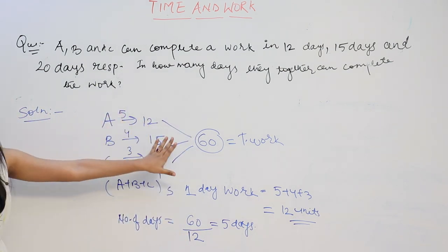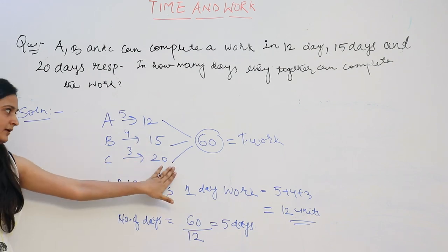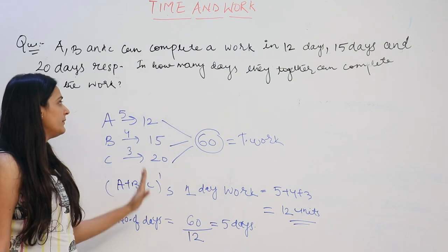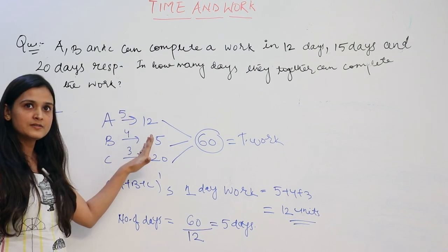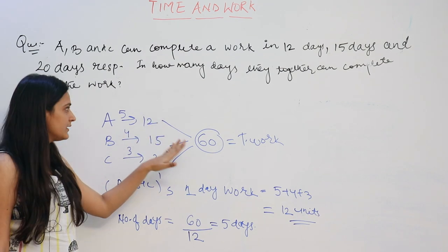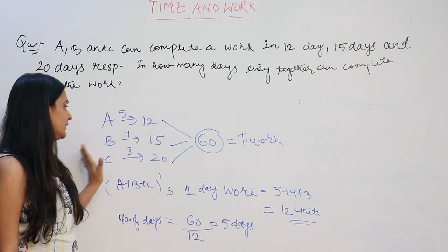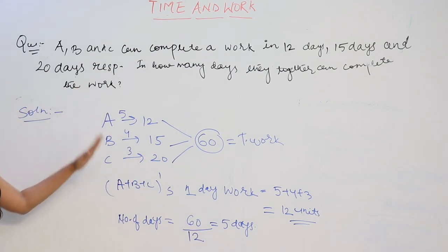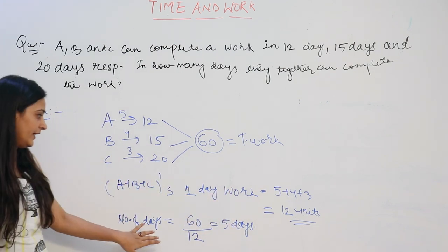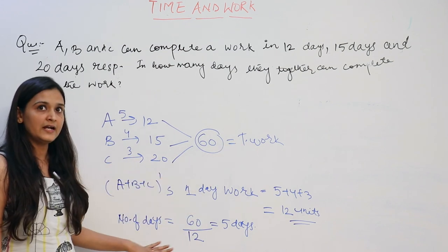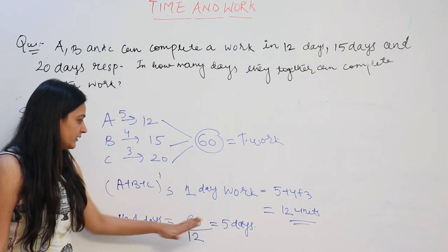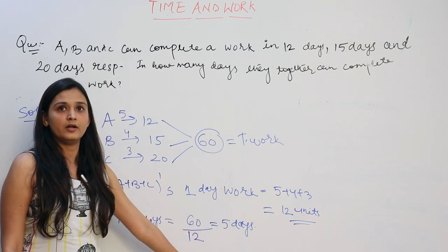To summarize: A does the work in 12 days, B in 15 days, C in 20 days. We found the total unit of work using LCM = 60. Then we found one day efficiency: A = 5, B = 4, C = 3. We added all three efficiencies and divided the total work by combined efficiency. Total work 60 ÷ 12 = 5 days. That is your answer.